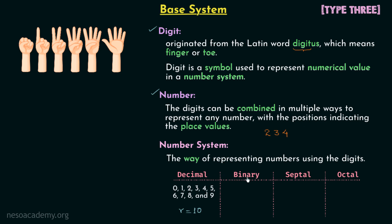Now we will talk about the binary number system. Binary means 2, and therefore we have only two symbols in binary: 0 and 1. The base or radix in binary number system is equal to 2. The digits 0 and 1 are called binary digits, and in short, we call them bits.